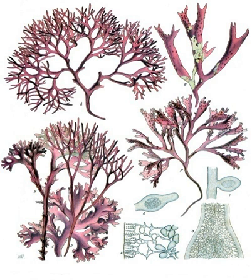Red algae store sugars as floridean starch, which is a type of starch that consists of highly branched amylopectin without amylose, as food reserves outside their plastids. Most red algae are also multicellular, macroscopic, marine, and reproduce sexually.